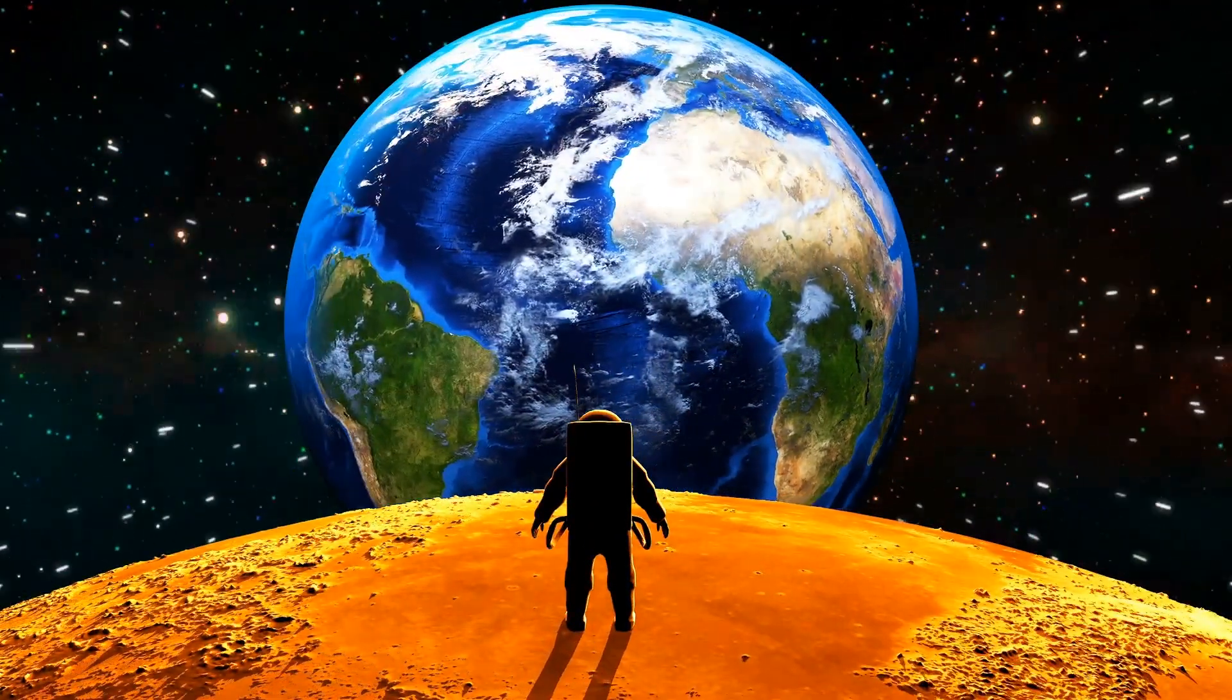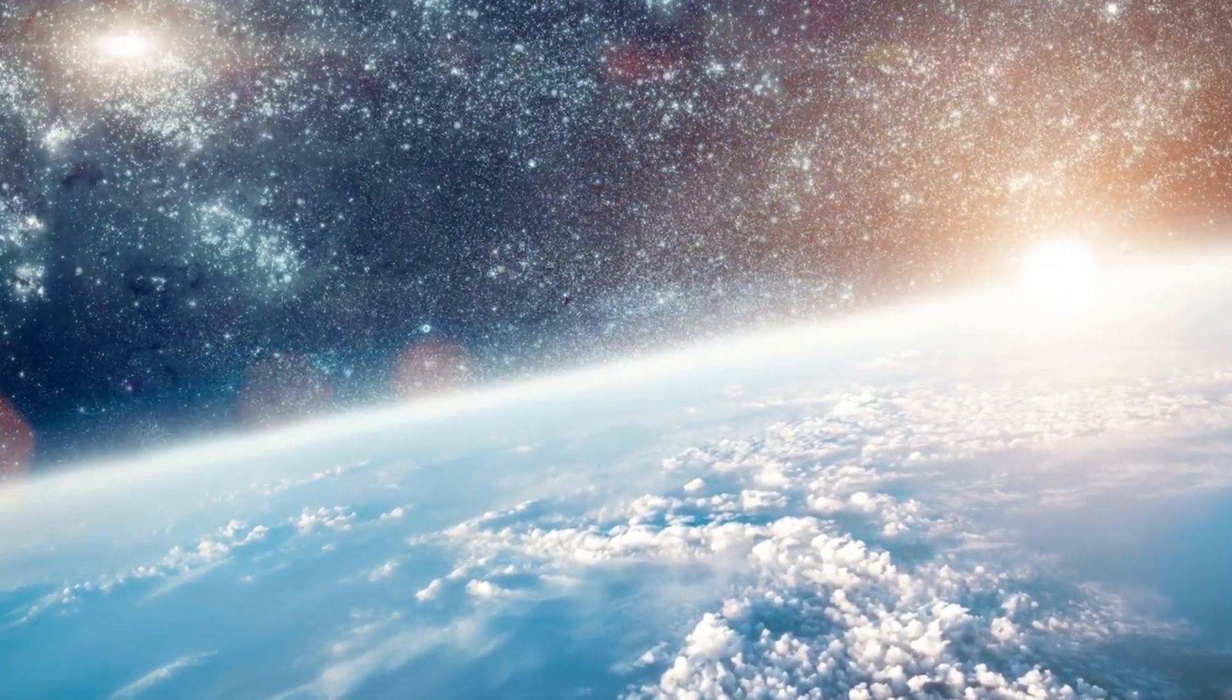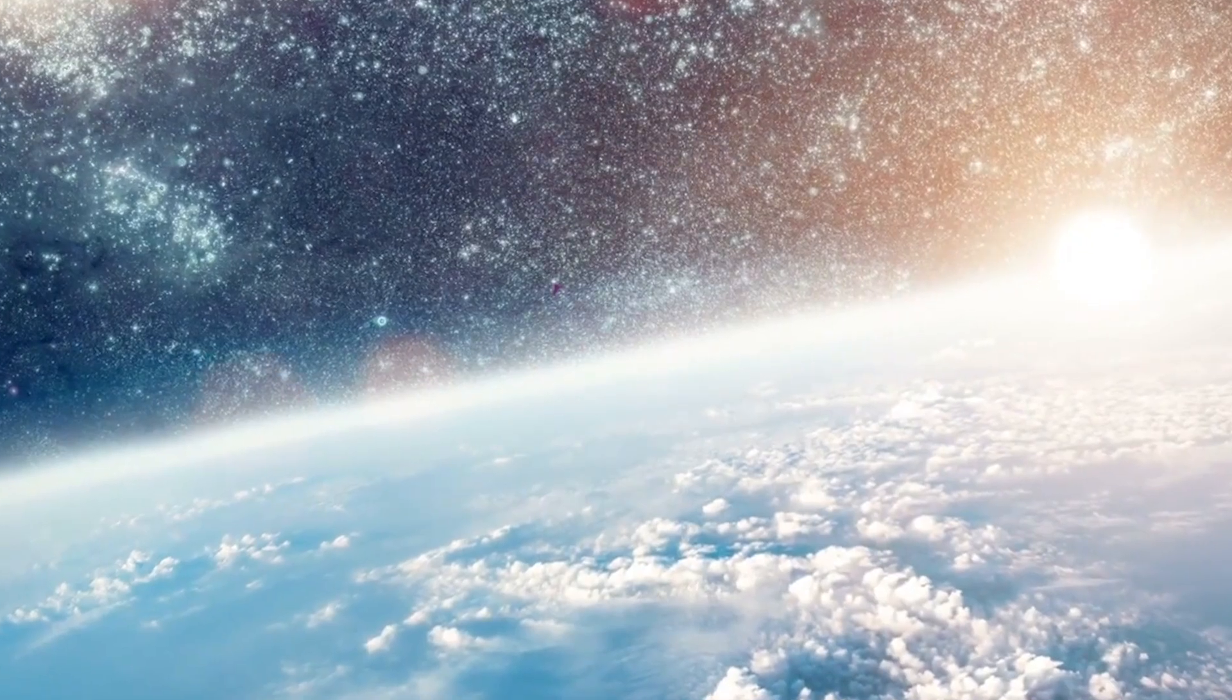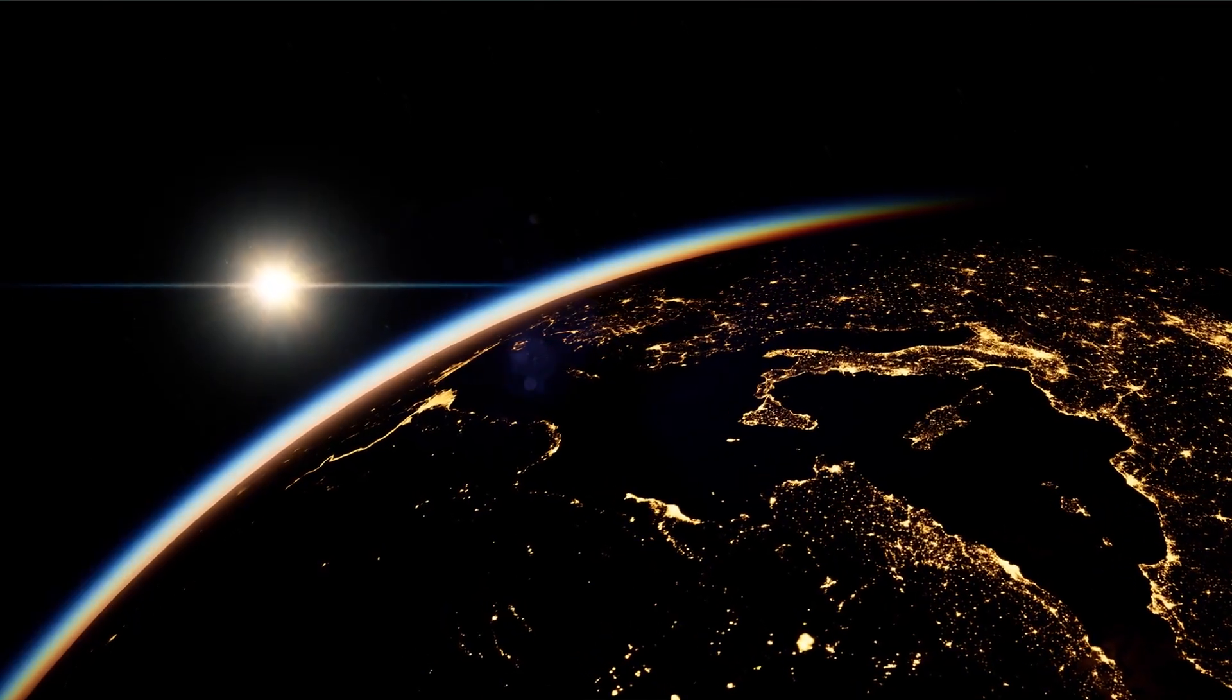For instance, light only needs one second to reach Earth from the moon. So the moon is one light-second away from Earth. Similarly, light from the sun requires eight minutes to reach Earth. Thus, the sun is eight light-minutes away from us. Let me also tell you that there are 9.5 trillion kilometers in one light year.